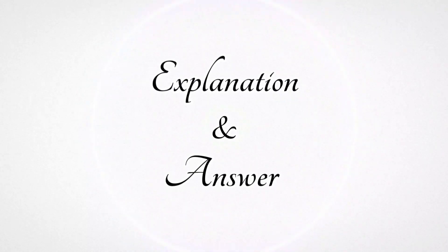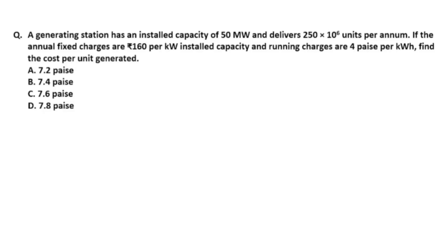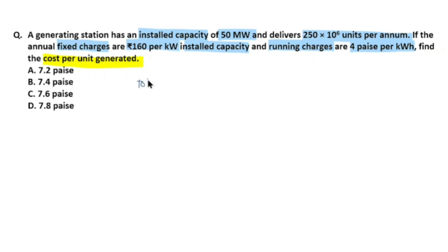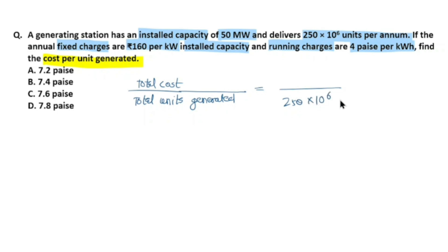We calculate cost per unit generated. Given: installed capacity 50 megawatt, total units generated per annum 250×10⁶ units, fixed charges are rupees 160 per kilowatt installed capacity, and running charges are 4 paise per kilowatt hour. To find cost per unit generated, we divide total cost by total units generated. Total units generated = 250×10⁶ units.